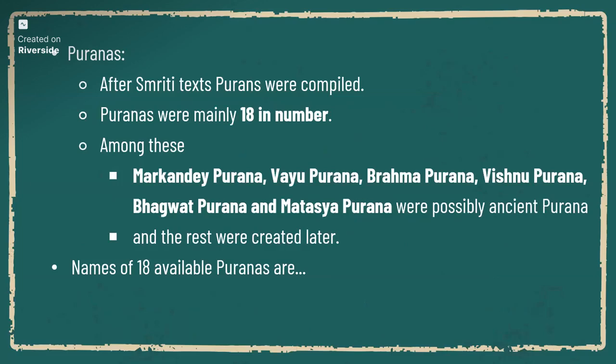The next is Puranas. Puranas are mythological stories — we do not know whether they are true. The difference between Epics and Puranas is that Epics are long stories with some historical information and sources, while Puranas contain mythical stories. There are 18 Puranas. Among those, Markandaya, Vayu, Brahma, Vishnu, Bhagavata, and Matsya are the six ancient Puranas belonging to the early Vedic period. The remaining 12 are from the later Vedic period.